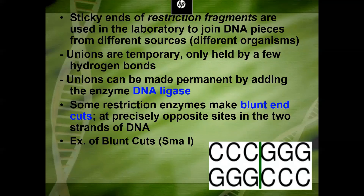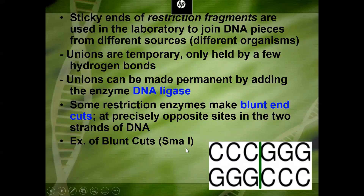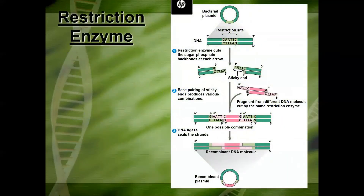The most useful restriction enzymes leave sticky ends that we can use for genetic cloning, but those ends are temporary — held by hydrogen bonds — until you add DNA ligase to make them permanent. Not all restriction enzymes leave sticky ends. Some give blunt end cuts, like SmaI, which recognizes C-C-C-G-G-G — the same sequence going backwards — and cuts right down the middle, leaving no sticky ends. Blunt end cuts are not very useful for genetic engineering because there are no sticky ends to base pair with another piece of DNA.